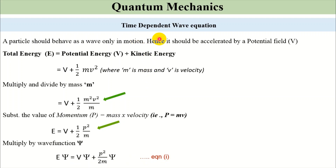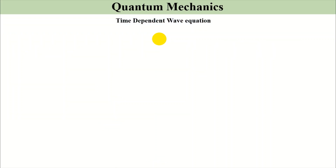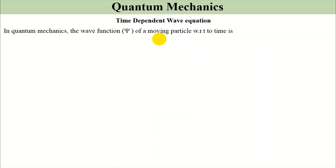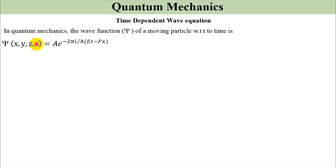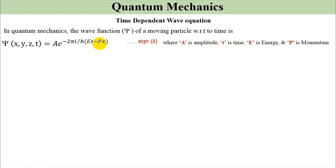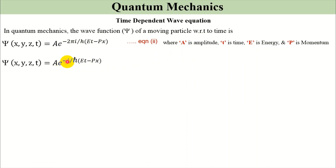In quantum mechanics, the wave function ψ of a moving particle with respect to time is given as ψ(x, y, z, t) = A·e^(−2πi/h)(Et − px), where A is the amplitude, T is time, E is energy, and p is momentum. This can be rewritten as A·e^(−i/ℏ)(Et − px), where ℏ = h/2π. We label this as equation number three.